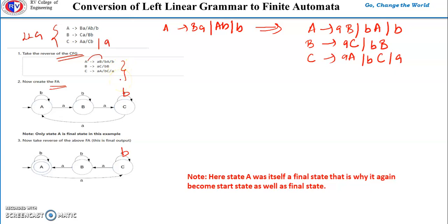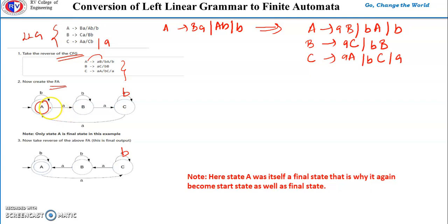Step three is to reverse the finite automata. To reverse it, we make the start state the final state and the final state the start state. Since A itself was the final state, it becomes both start and final after reversing. Then we reverse the direction of all edges: A to B becomes B to A, B to C becomes C to B, and C to A becomes A to C.